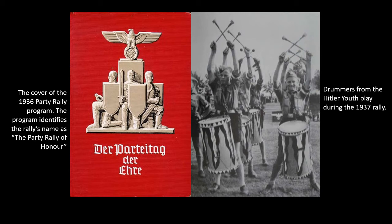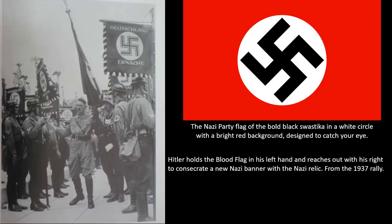Hitler also used the annual congresses to present new ideas and policies. In 1935, he used the spectacle of the rally to introduce his race laws that legislated against Jews, having the entire Reichstag move from Berlin to Nuremberg so the laws could be passed during the rally. Passing the Nuremberg Laws that legalized anti-Semitism was a major moment for Hitler and his regime, and doing it at the rally saw huge amounts of praise and celebration by party members.